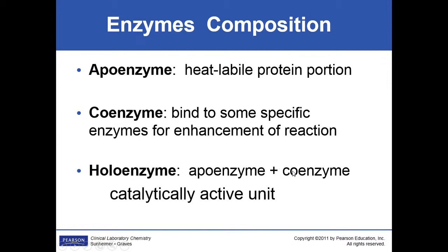A few terms you need to know about enzymes. Remember the prefix 'APO' from our lipids — it refers to the protein portion of the compound. A coenzyme is a second portion of the enzyme that enhances what we need it to do. When you put those two together — the apoenzyme and the coenzyme — you get a holoenzyme. This is your active, catalytically active unit.